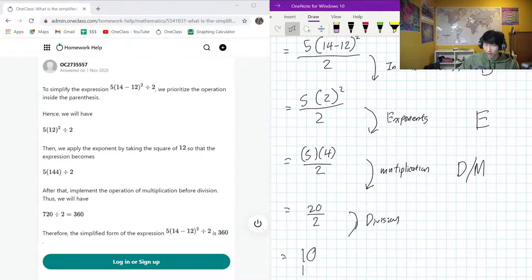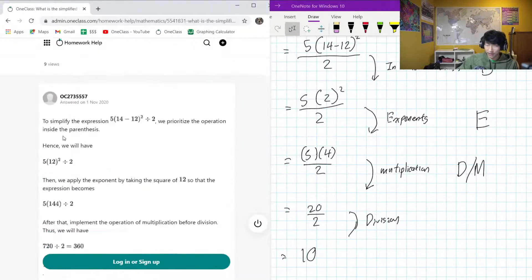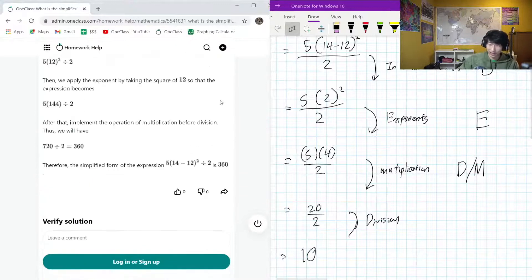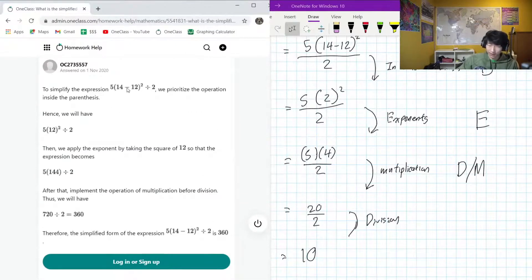Okay, so 14 minus 12 is definitely not 12, it's 2. The final result of this has got to be 10. It's not going to be 360 because the in-bracket stuff was just calculated wrong, but otherwise everything seems to be following the proper procedure.